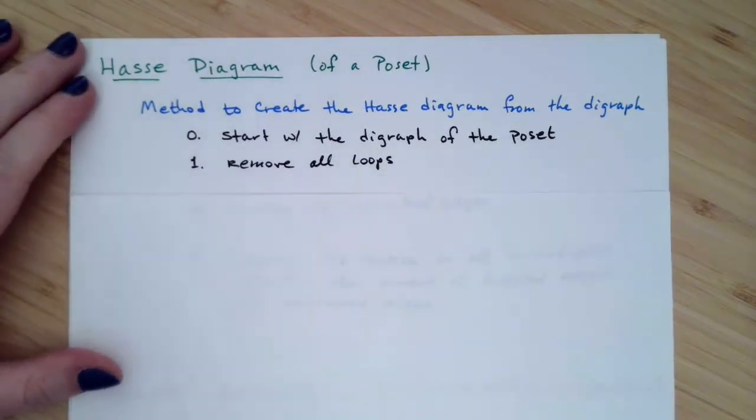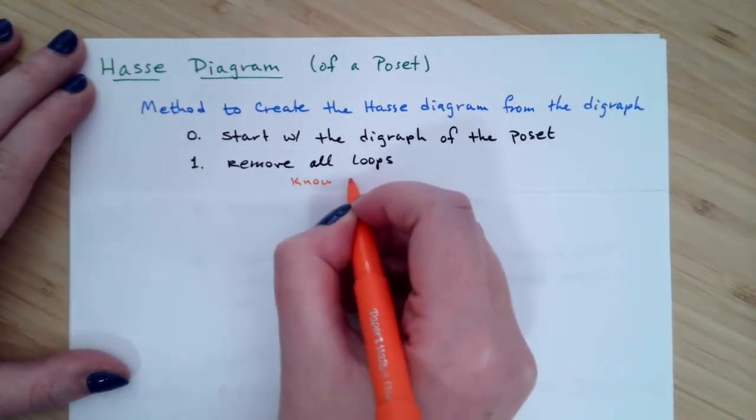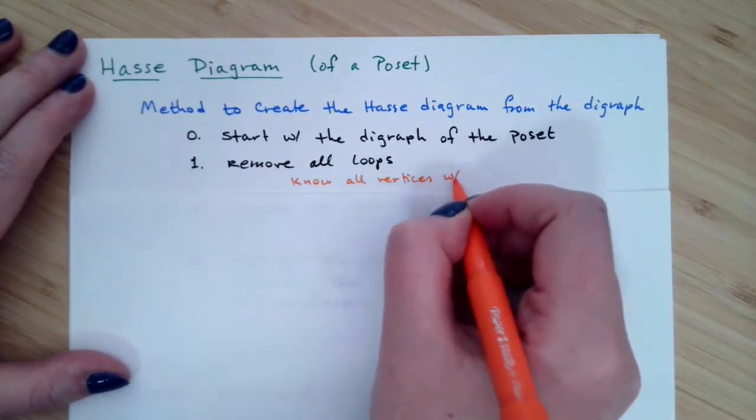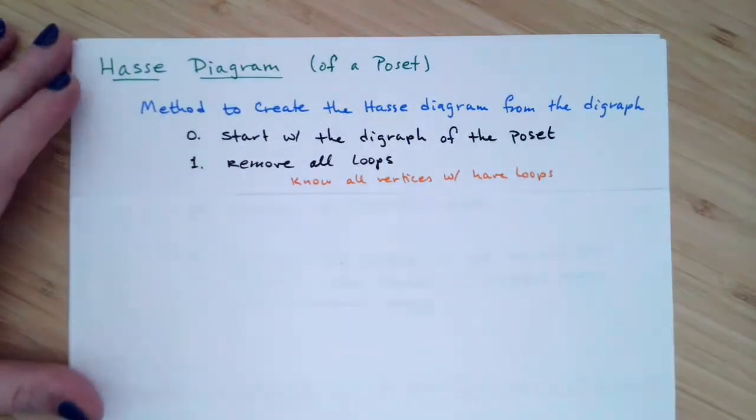Now why would we do this? Because a poset and specifically the relation tied in with your poset has the reflexive property, which means we know already that all vertices in the digraph will have loops on them. One of the things that the Hasse diagram does is it's a way to take all of the intense clutter that is going to be in our digraph and bring it down to the usable information we actually want to deal with.